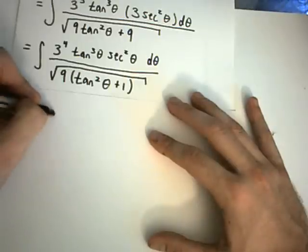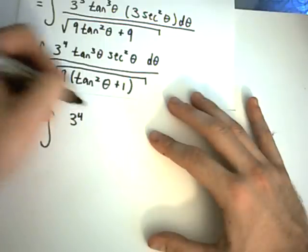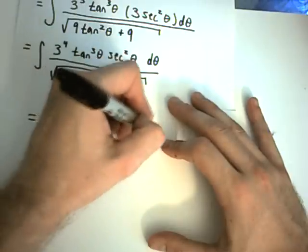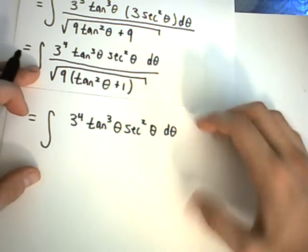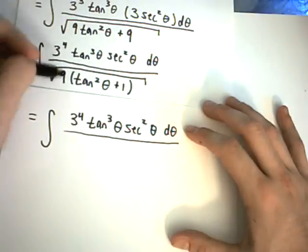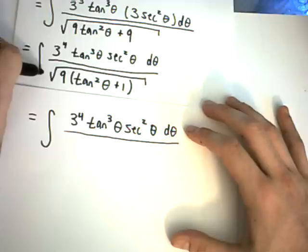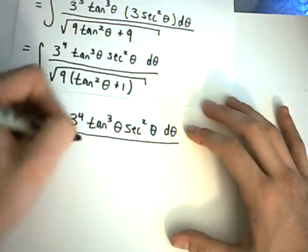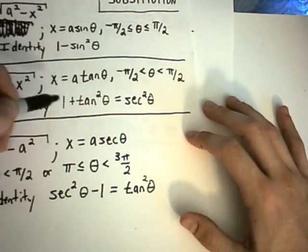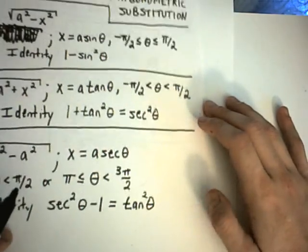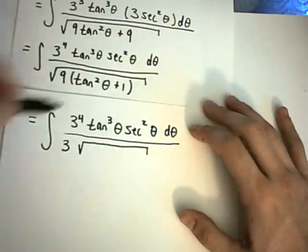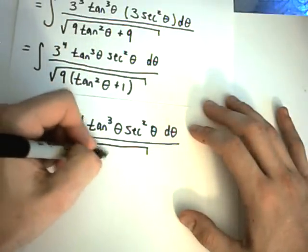And now the idea is, on the bottom, I could factor the 9 out. And this is why you pick the substitution in such a way, so that the coefficients are going to be the same. You can factor the 9 out and have tangent squared theta plus 1 left over. So, now let's keep simplifying this down a little bit more.